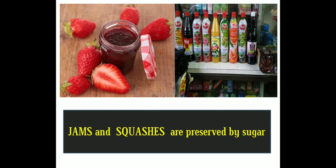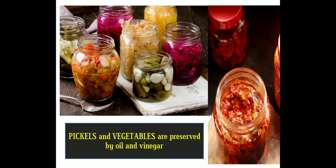Next is preservation by sugar. Sugar is used to preserve jams, jellies, and squashes. Sugar reduces the moisture content, which inhibits the growth of bacteria.